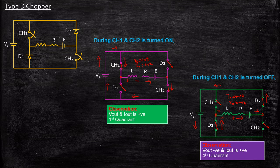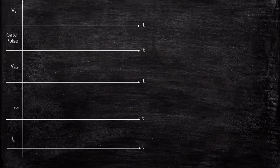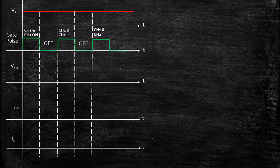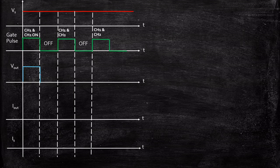Now we know the inferences — which quadrants the circuit operates in and what Vout and Iout are during both operations. We will now draw the waveforms. We consider supply voltage Vs as a constant DC voltage, and gate pulses given to CH1 and CH2 together. When CH1 and CH2 are turned on, the output voltage is positive — the source is directly connected to the load, so the output follows the source voltage waveform until the choppers turn off.